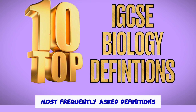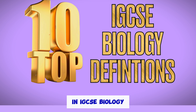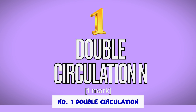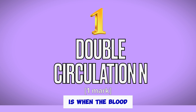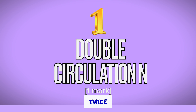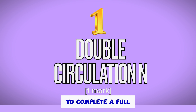These are the top 10 most frequently asked definitions in IGCSE biology. Number 1: Double circulation is when the blood goes through the heart twice to complete a full cycle around the body.